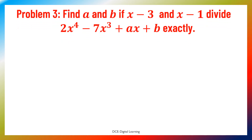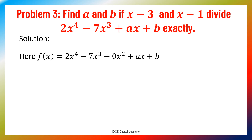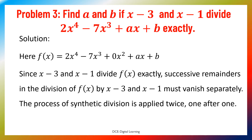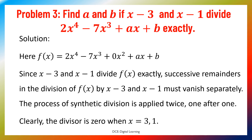Problem 3: Find a and b if (x−3) and (x−1) divide 2x⁴ − 7x³ + ax + b exactly. Here f(x) equals 2x⁴ − 7x³ + 0x² + ax + b. Since (x−3) and (x−1) divide f(x) exactly, the successive remainders in the division of f(x) by (x−3) and (x−1) must both vanish. Synthetic division is applied twice; the divisor is 0 when x equals 3 and 1.